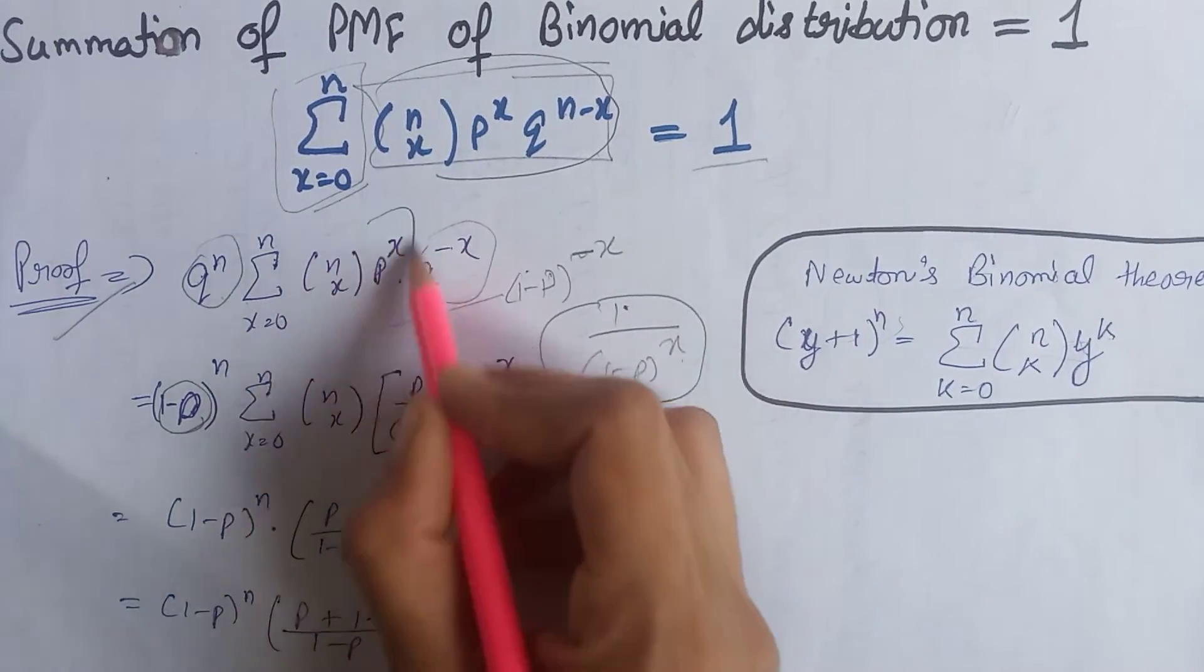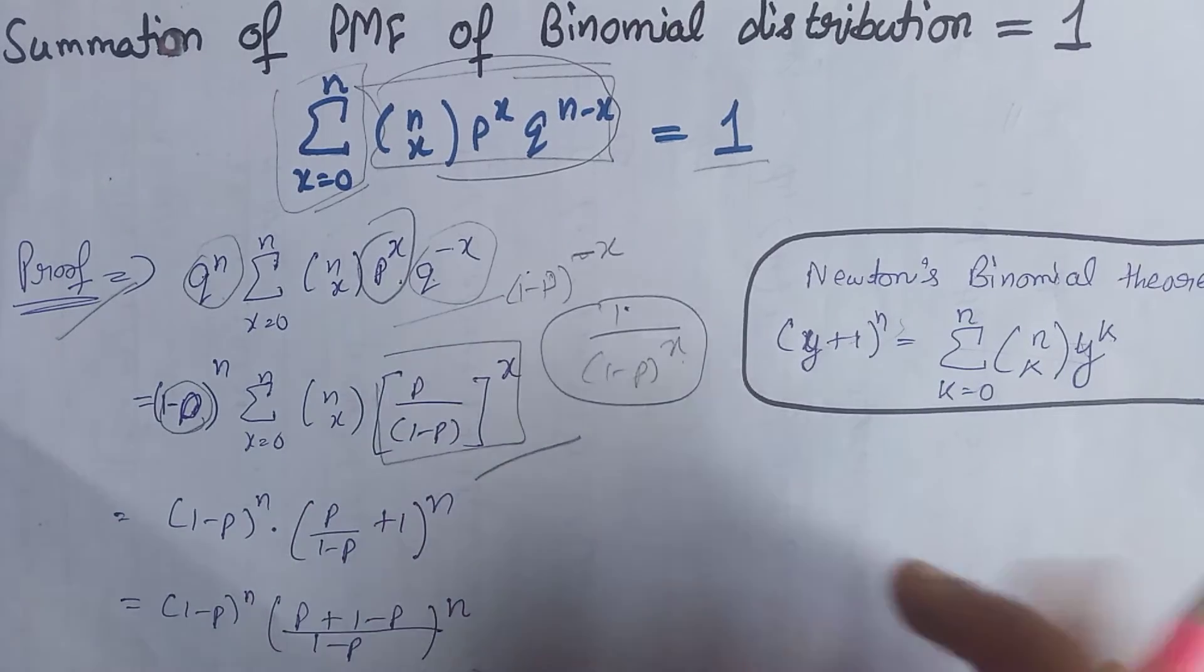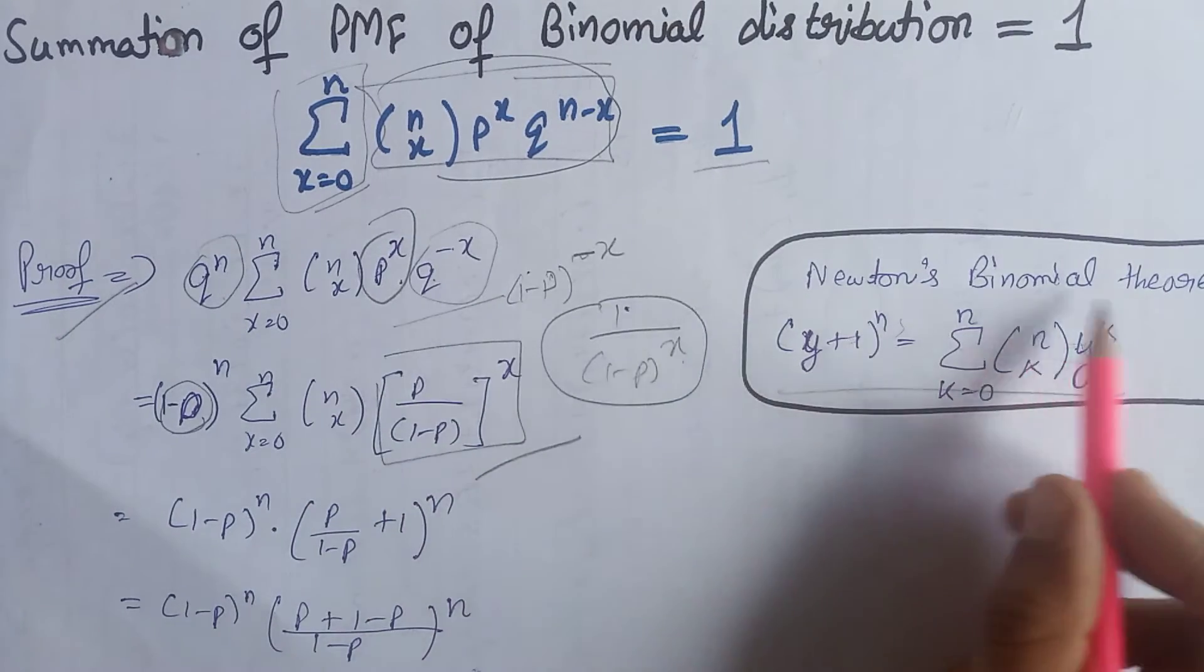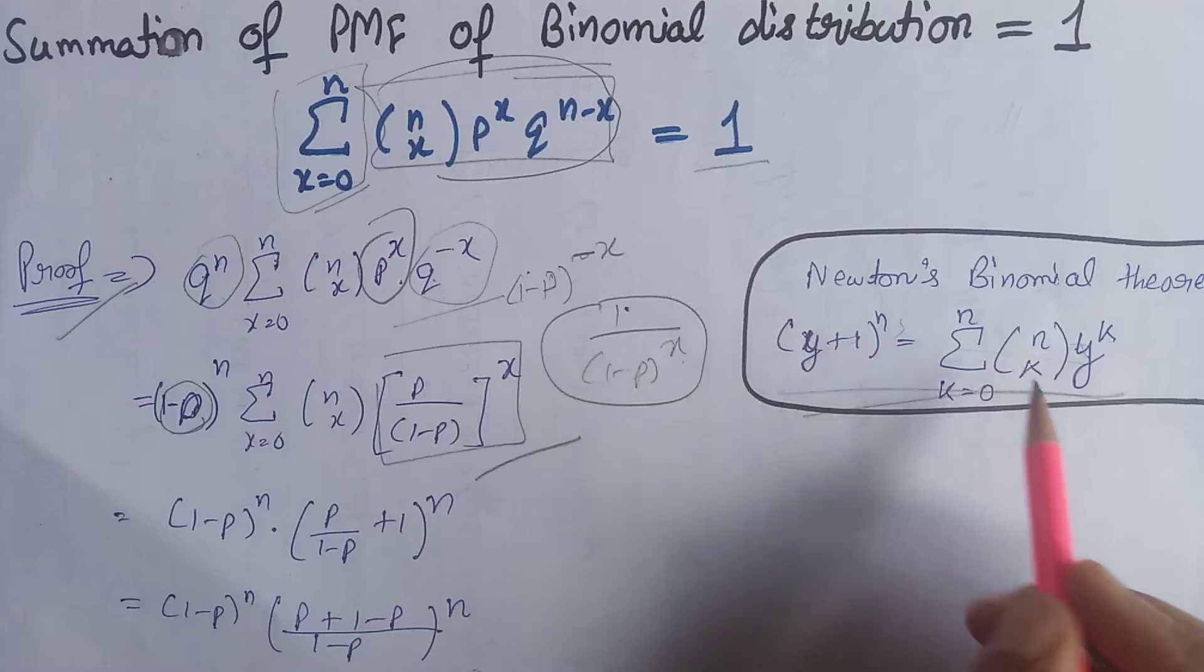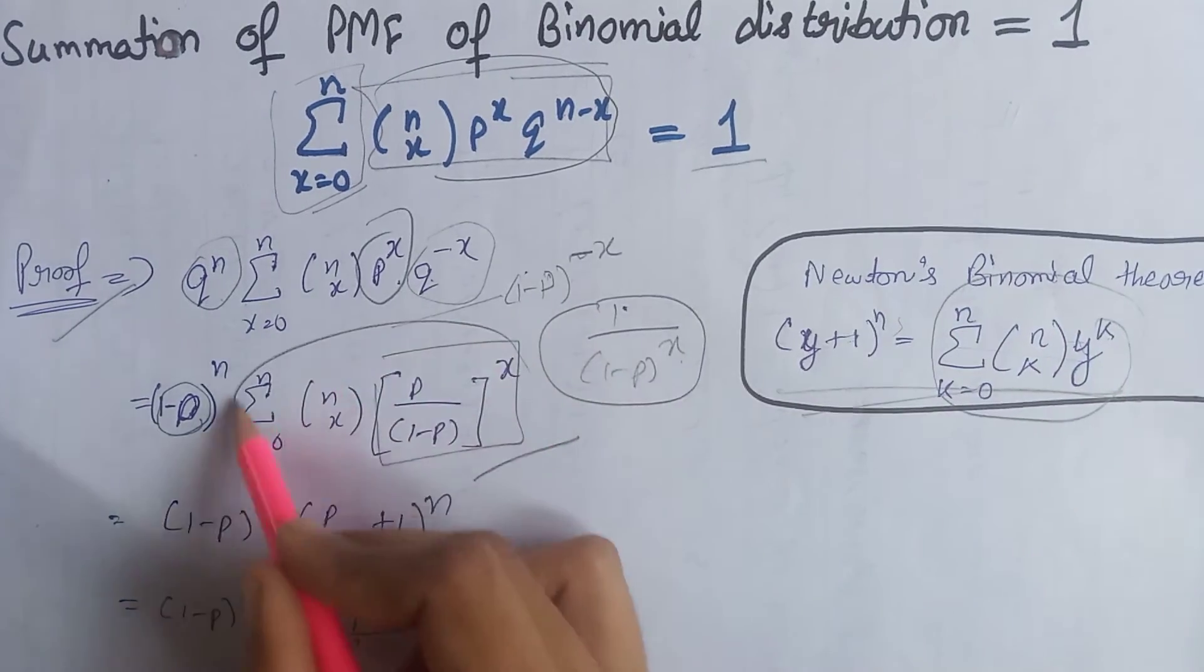On combining this term with this term, we get this whole term. Now we know that this is the Newton's binomial theorem formula. On comparing this term with this term...